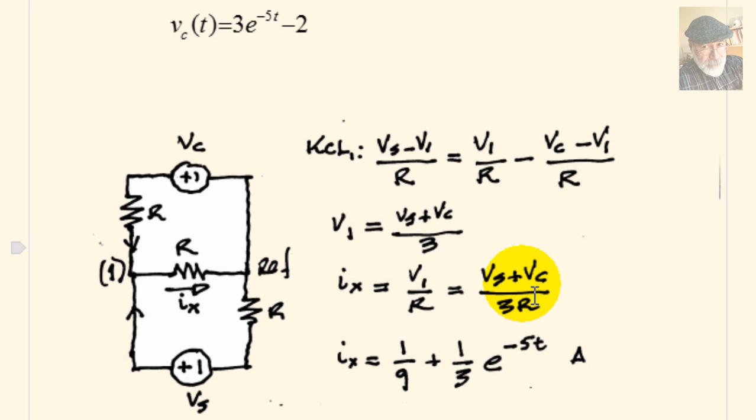We substitute Vs is 3 volts, we substitute R is 3 ohms, and Vc is this function of time. When we do that, the current Ix is 1 over 9 plus 1 third of e to the negative 5t. Those are amperes, of course.